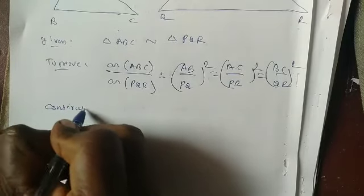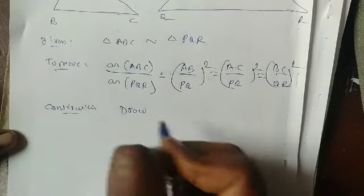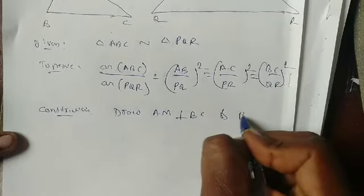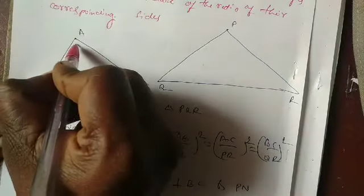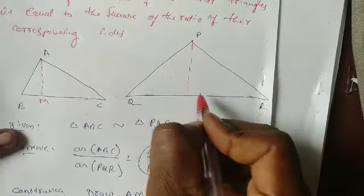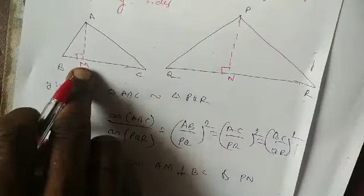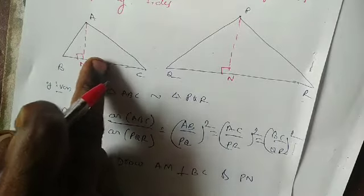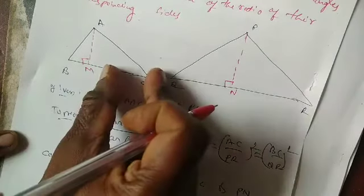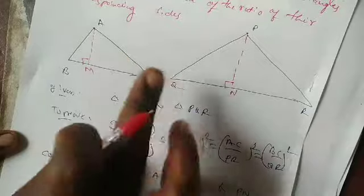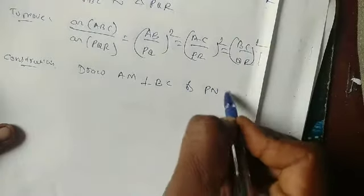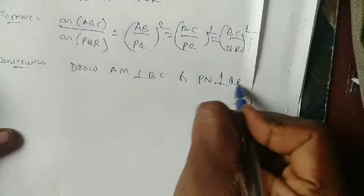Construction: Draw AM perpendicular to BC, and PN perpendicular to QR. AM is the altitude — perpendicular means 90 degrees. Similarly, PN is perpendicular to QR, also 90 degrees.